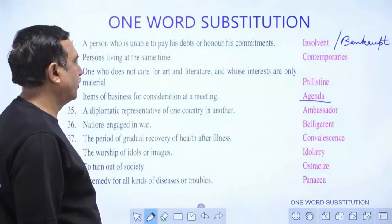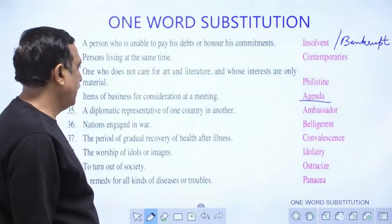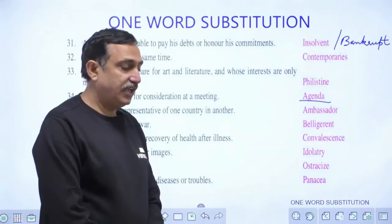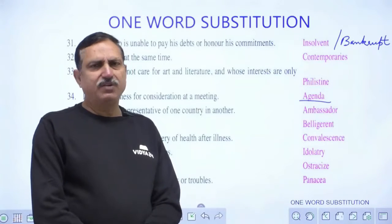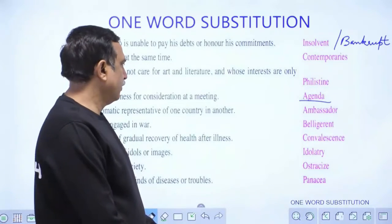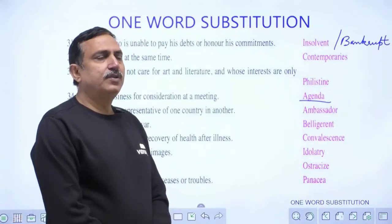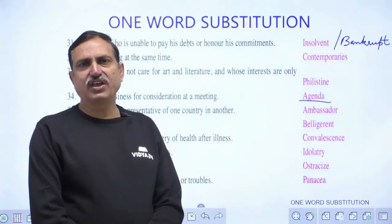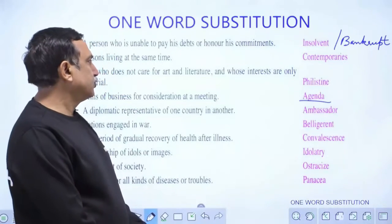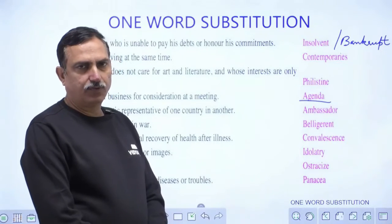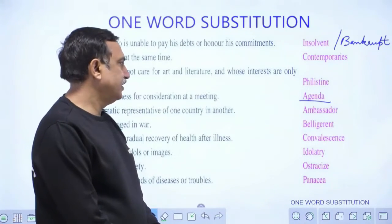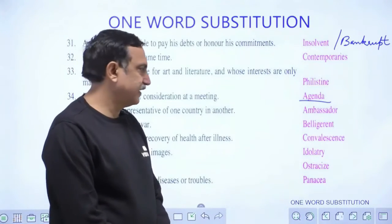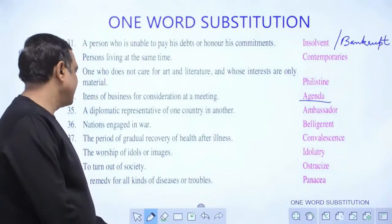Nations engaged in war are called belligerent. India and Pakistan are belligerent to each other at times. North Korea and the US, or Iran and the USA, are also examples — their interests do not always match, making them belligerent. In diplomacy, there is no permanent friend or permanent enemy; only time and interest shape relations.